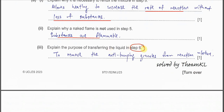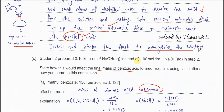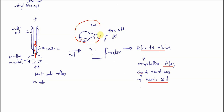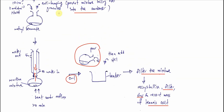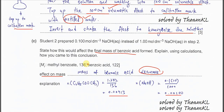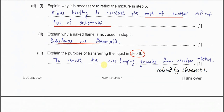After the reflux and cooling, we pour the liquid carefully into the beaker to separate the reaction mixture from the anti-bumping granules. We need to pour carefully to remove the anti-bumping granules from the reaction mixture — that is the purpose.